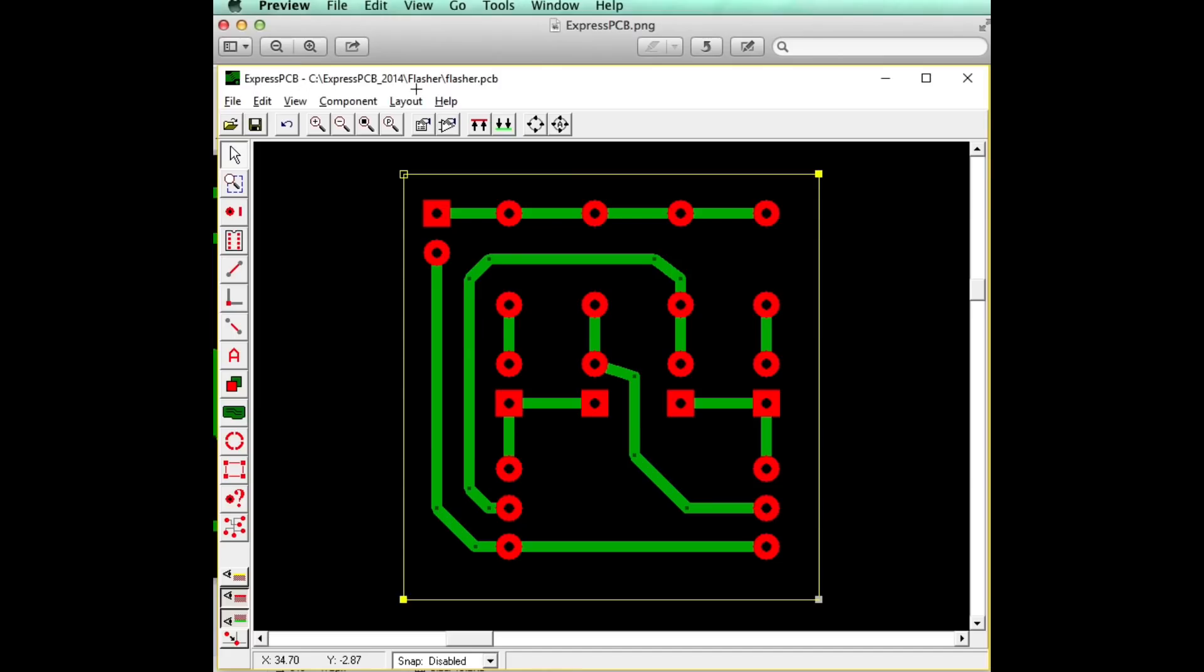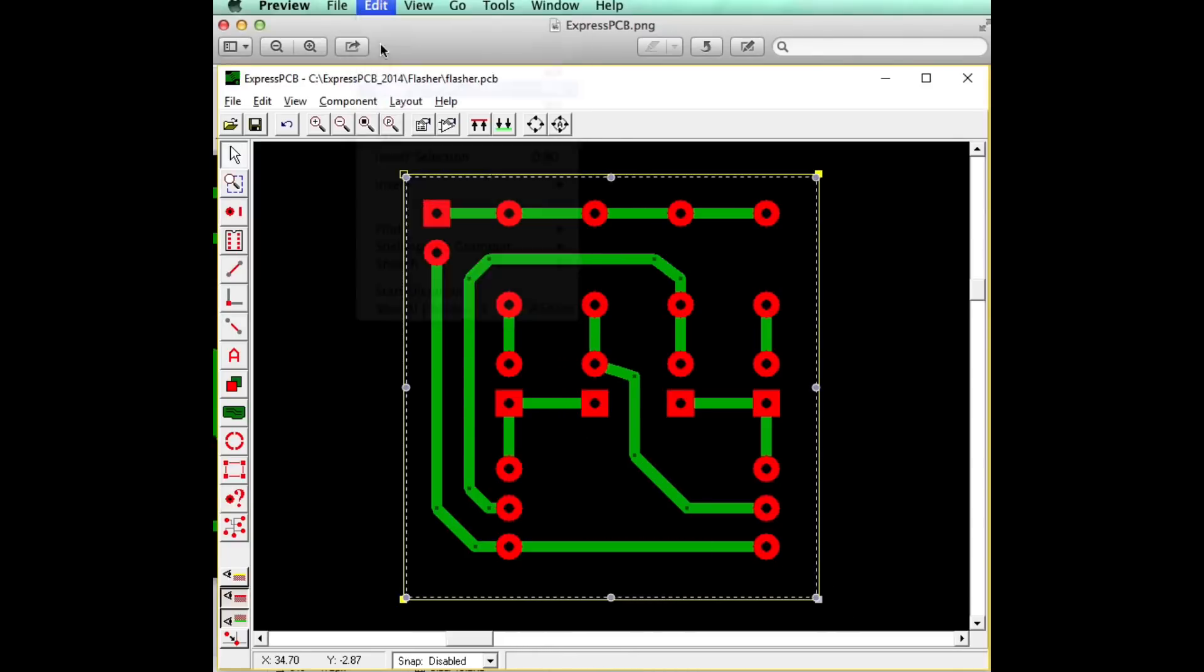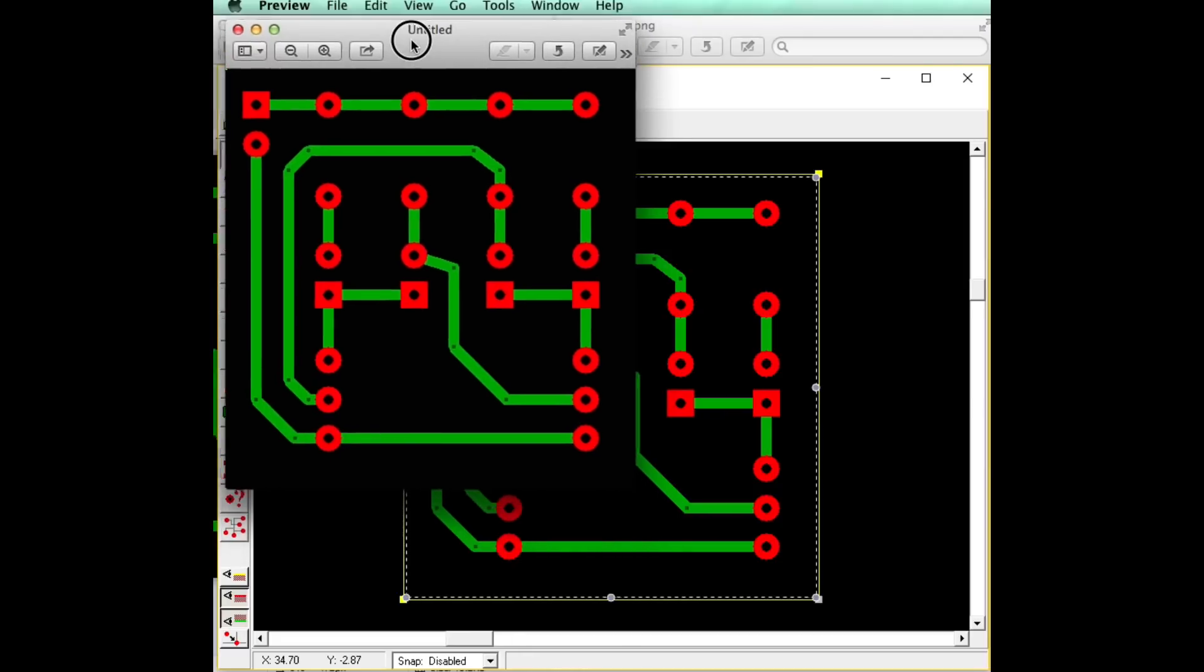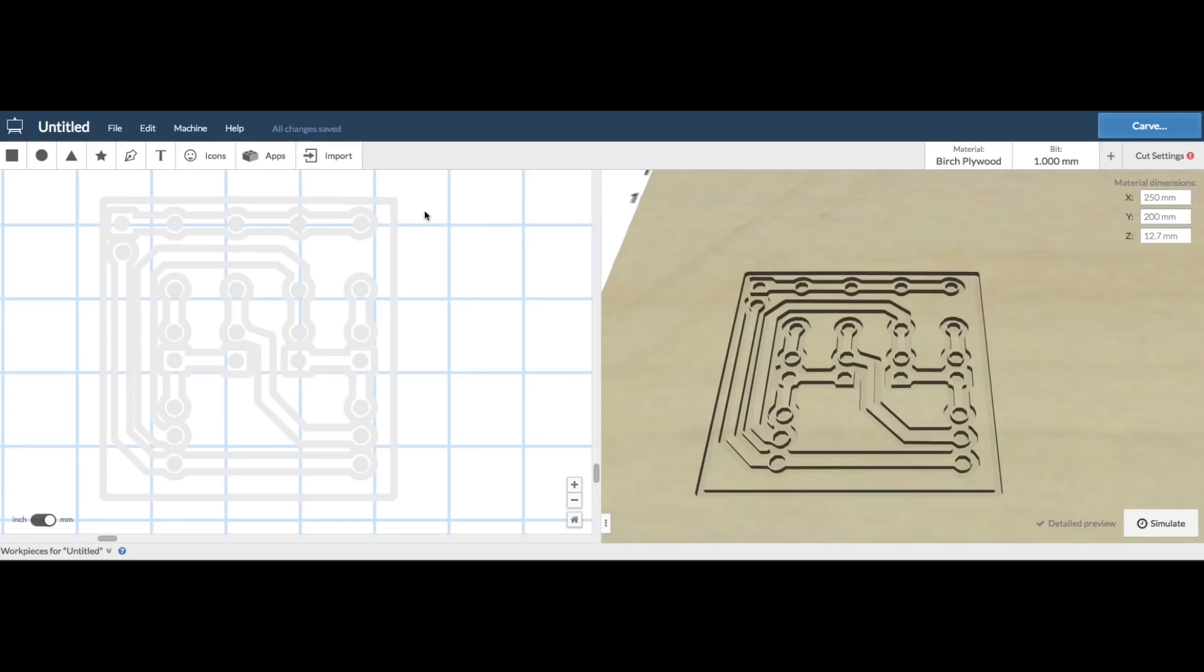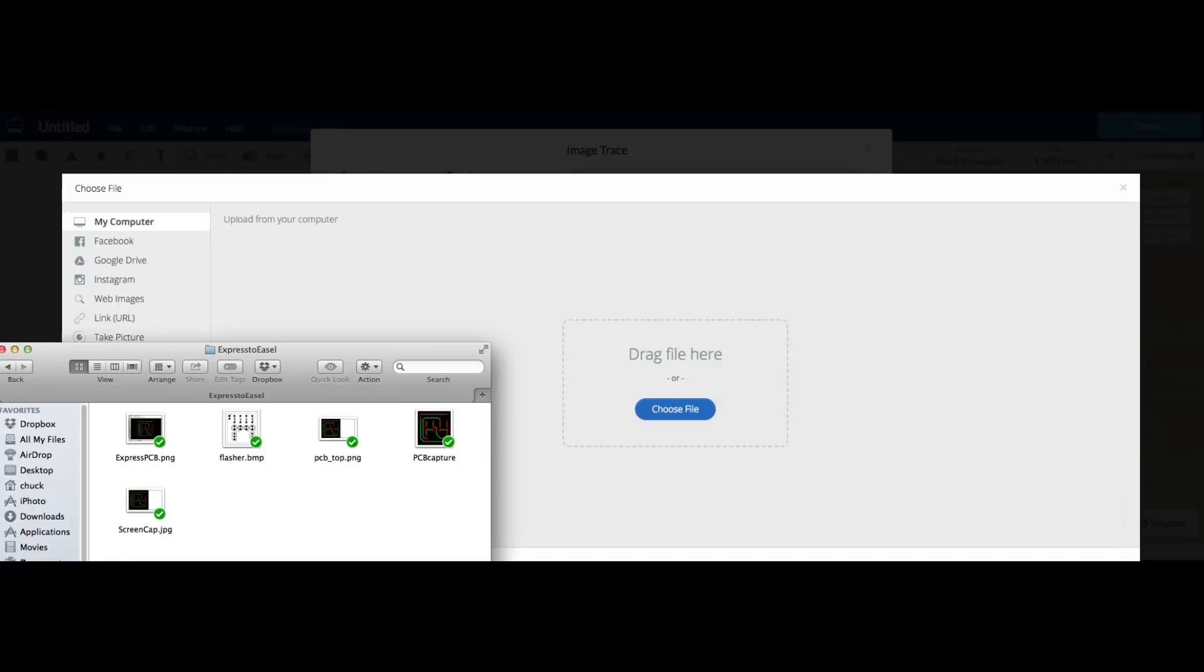So I wanted to see if I could just screen capture a board layout. So here's a simple board layout that I had created and I just screen captured that circuit as an individual image, and then I went to Easel to see if this would work. I imported it as an image to trace.